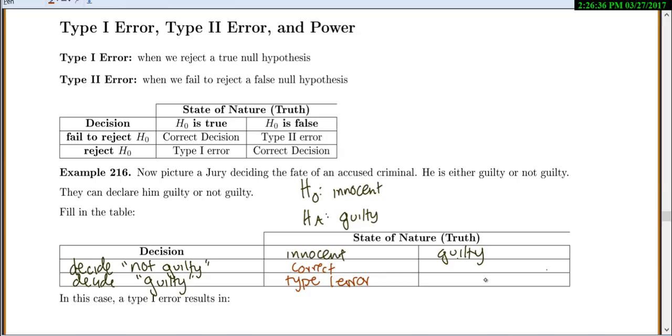If he's guilty and we decide they're not guilty, that would be a type 2 error, because my null was false - he was guilty - but we didn't actually reject the null that he was innocent. And if he's guilty and we decide guilty, that would also be correct.